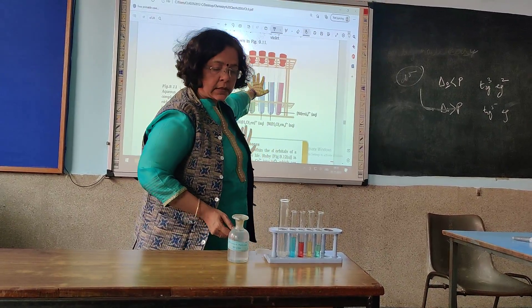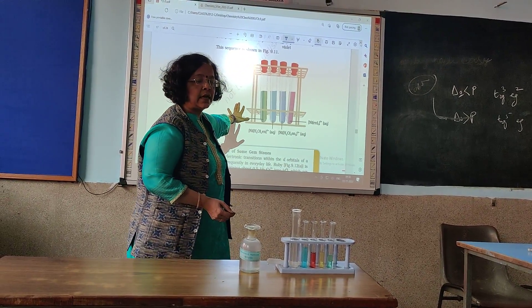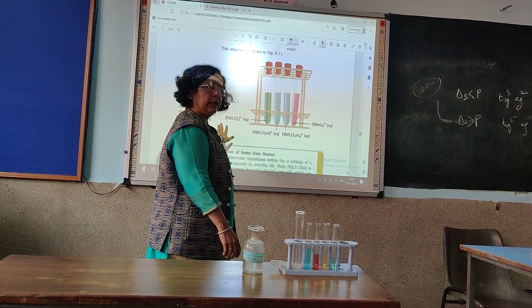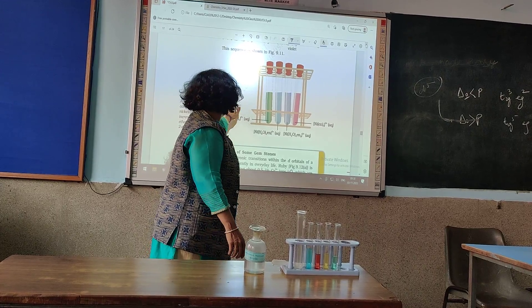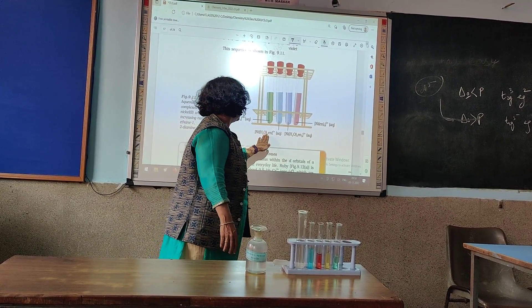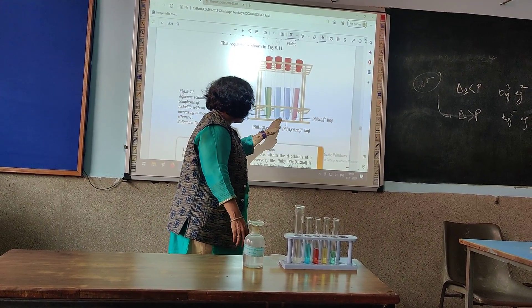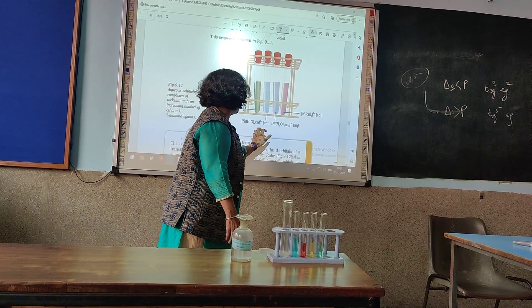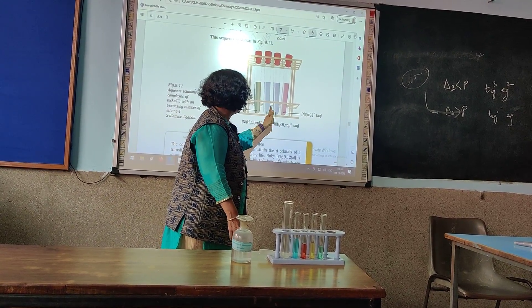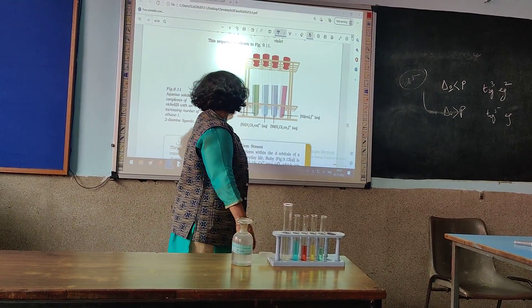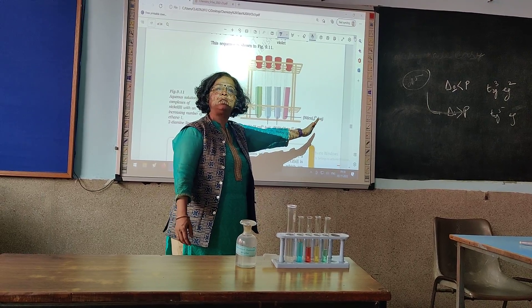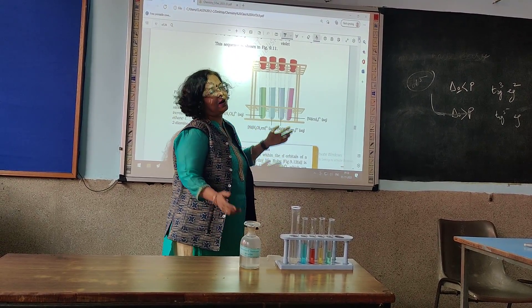Your NCERT syllabus on coordination compounds gives you a compound of nickel where, if water is the ligand, the colour is this. On changing the ligands stepwise from water to ethylenediamine 1, ethylenediamine 2, ethylenediamine 3 — changing water altogether to ethylenediamine — leads to a change of colour.